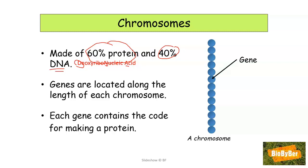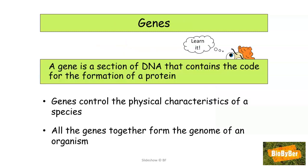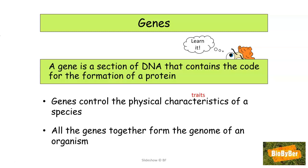Each gene contains the code for making a protein. So in a nutshell, the definition of a gene is that it is a section of DNA — part of a chromosome — and it contains the code or the information for making a protein. Since proteins are used for bodybuilding and making parts of cells, we can say that genes control the physical characteristics or the traits of a species.